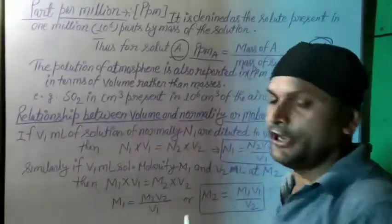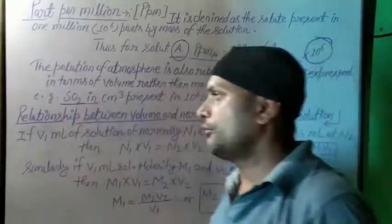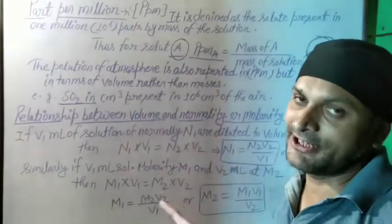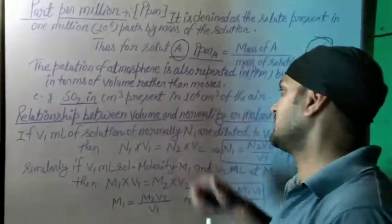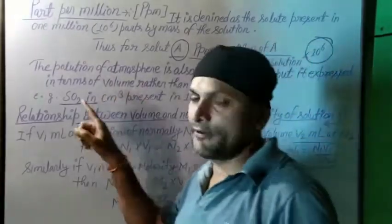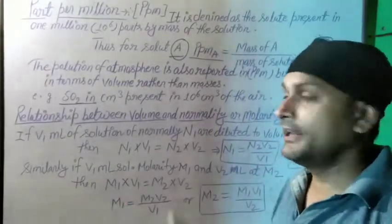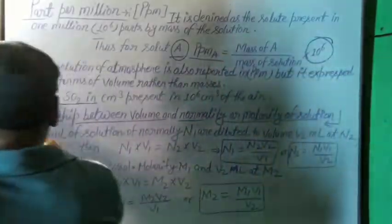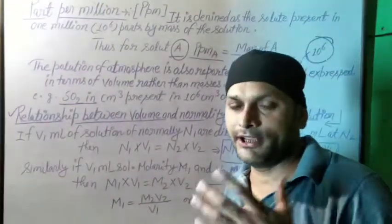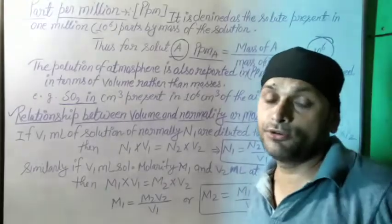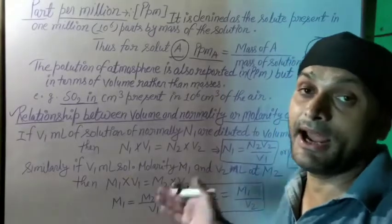This means we take the same quantity — for example, sulfur dioxide — and with it we apply one million parts by volume. Suppose there is 20 cm³, so 20 multiplied by 10 to the power 6 cm³ of air. And if we go by mass, we write it in cm³ of solute.